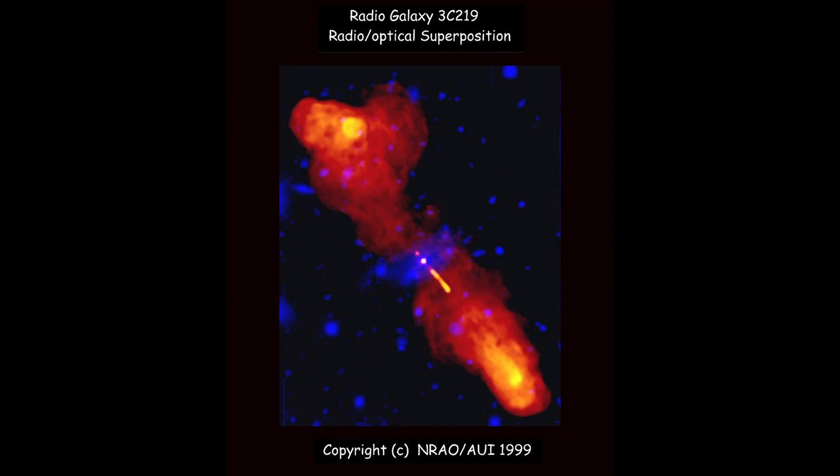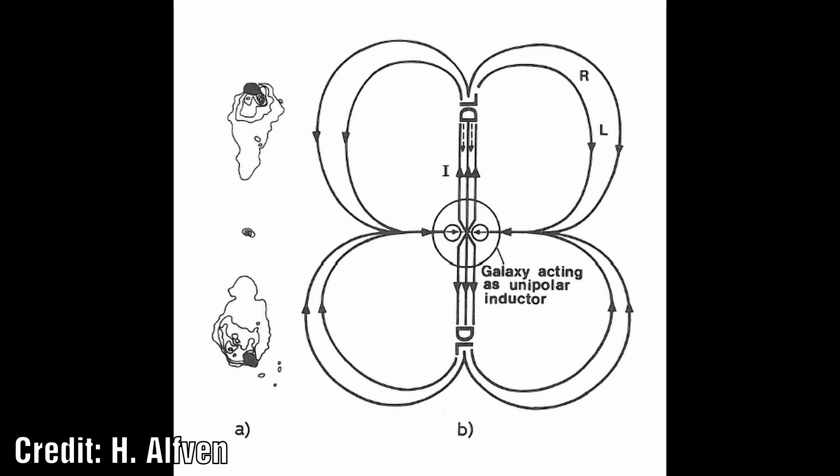Double radio sources. Hannes Alfvén felt that if you replace the rotating magnetised sun in the heliospheric circuit by a galaxy which is also magnetised and rotating, then there would be a similar current system, but magnified by about 9 orders of magnitude. Inside the galaxy, the current may flow in the plane of symmetry similar to the current sheet in the equatorial plane of the sun. The EMF which is derived from the galactic rotation is applied to two circuits in parallel, one to the north and one to the south.